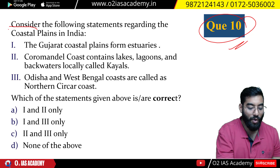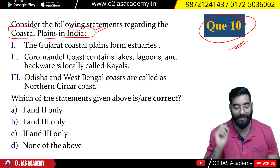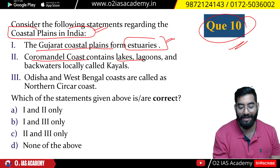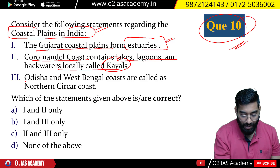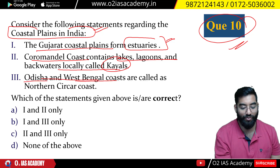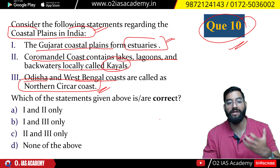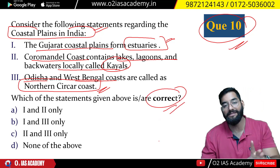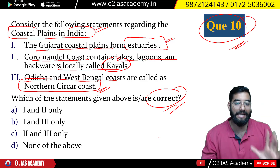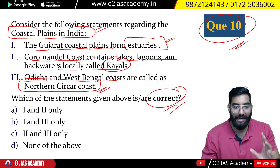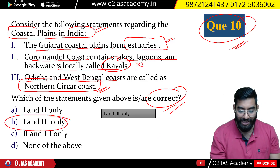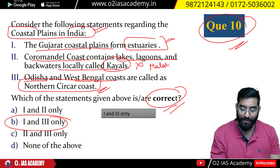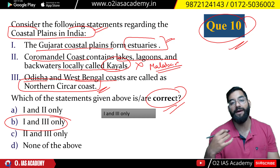Question number 10: Consider the following statements regarding coastal plains in India — Gujarat coastal plains form estuaries; the Coromandel coast has lakes and lagoons called Kayals; Odisha and West Bengal coast is called Northern Circars. Pause the video and give your answer. The correct answer is 1 and 3 — the second statement is incorrect. It is not the Coromandel coast but the Malabar coast in Kerala where you see backwaters and Kayals.